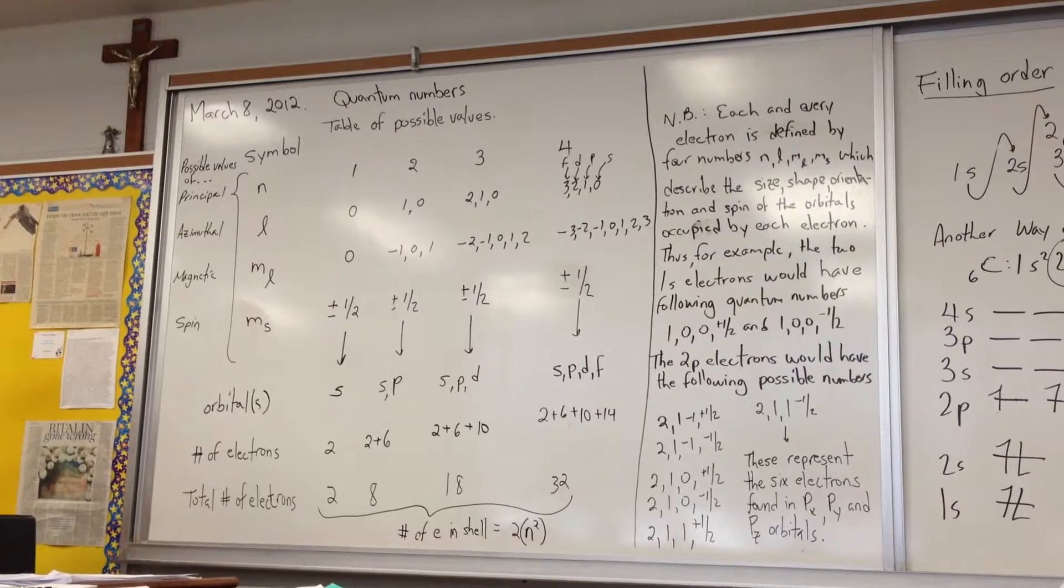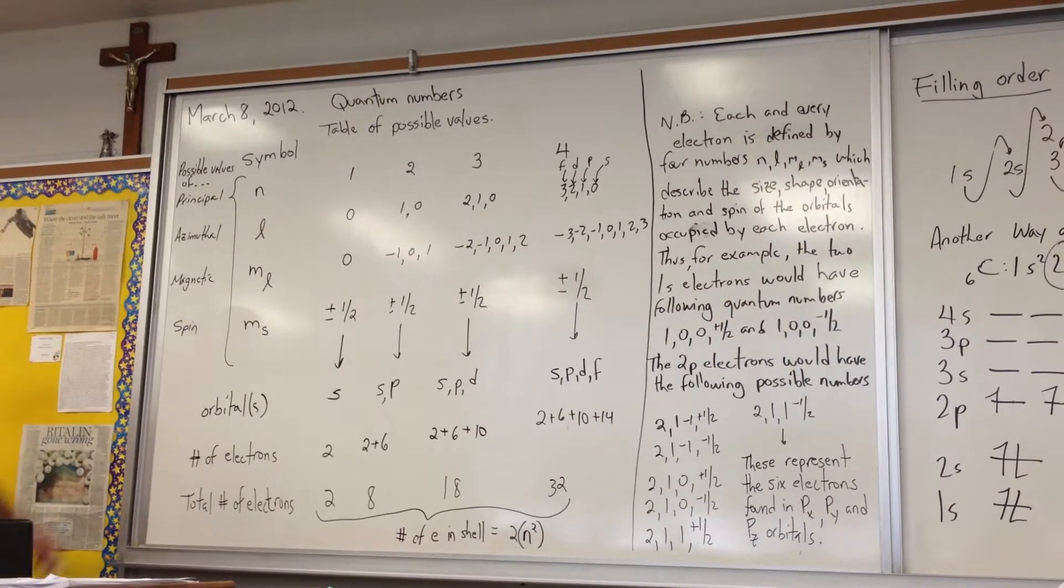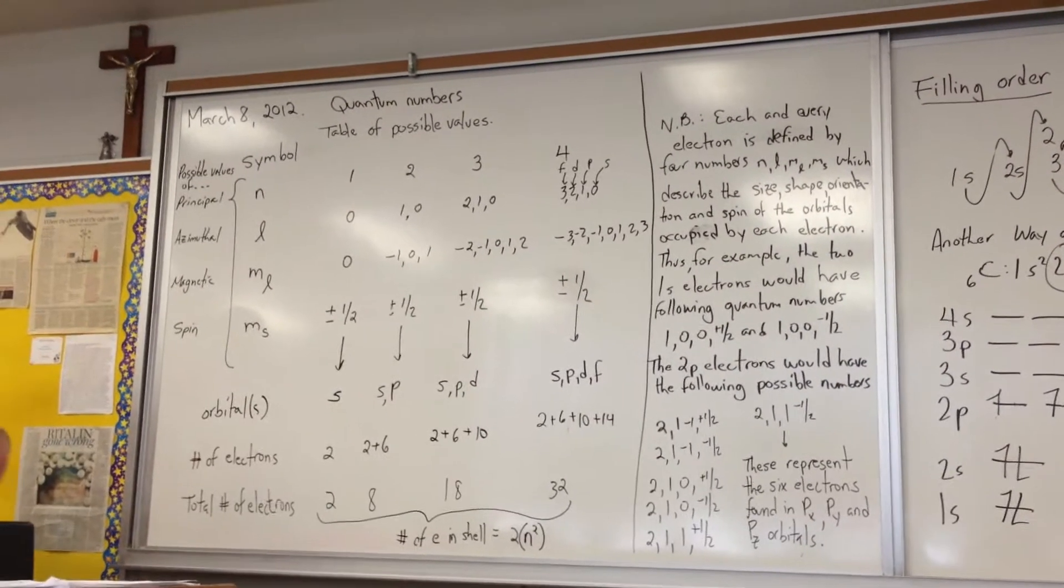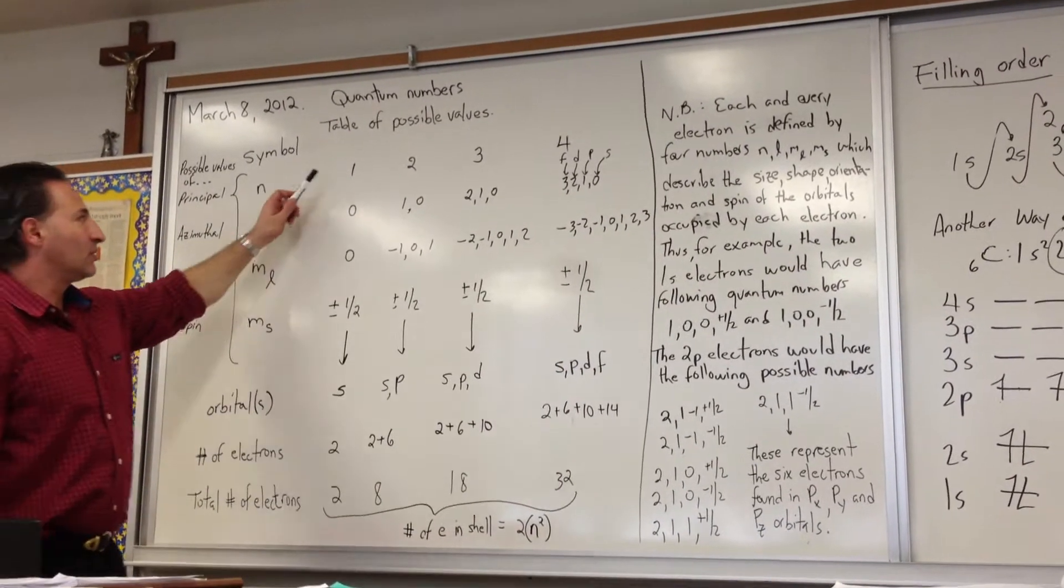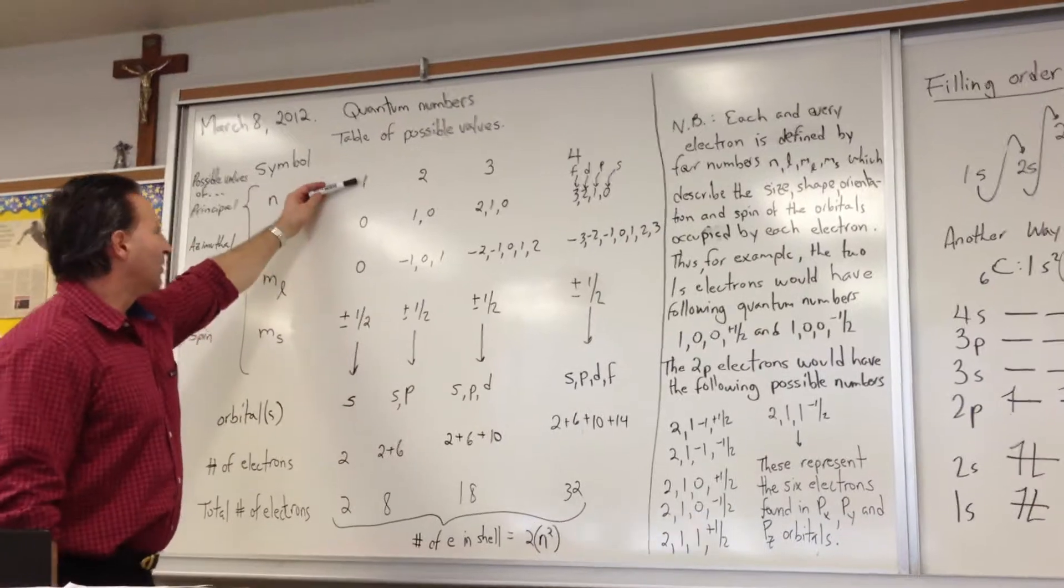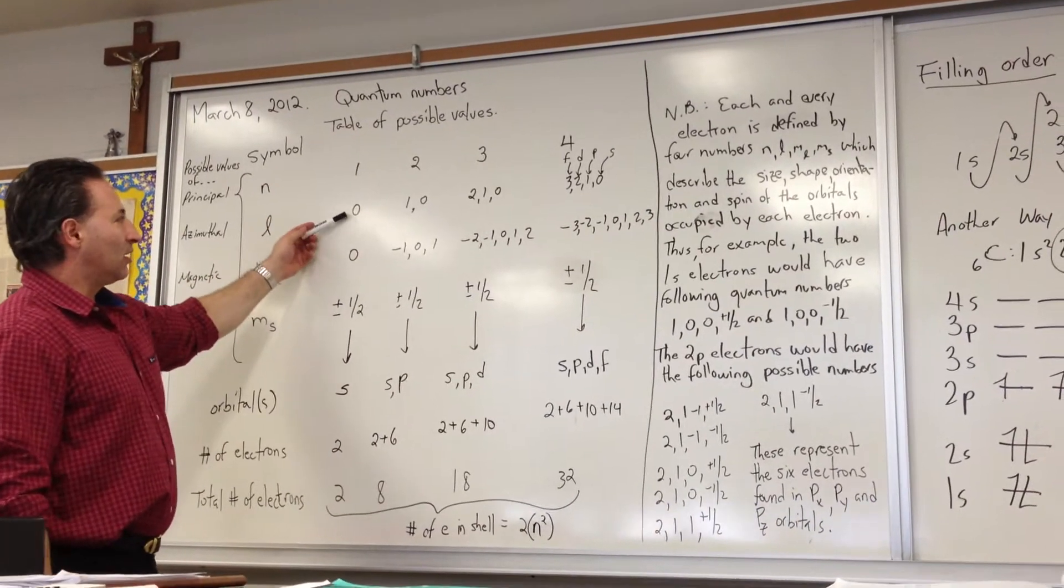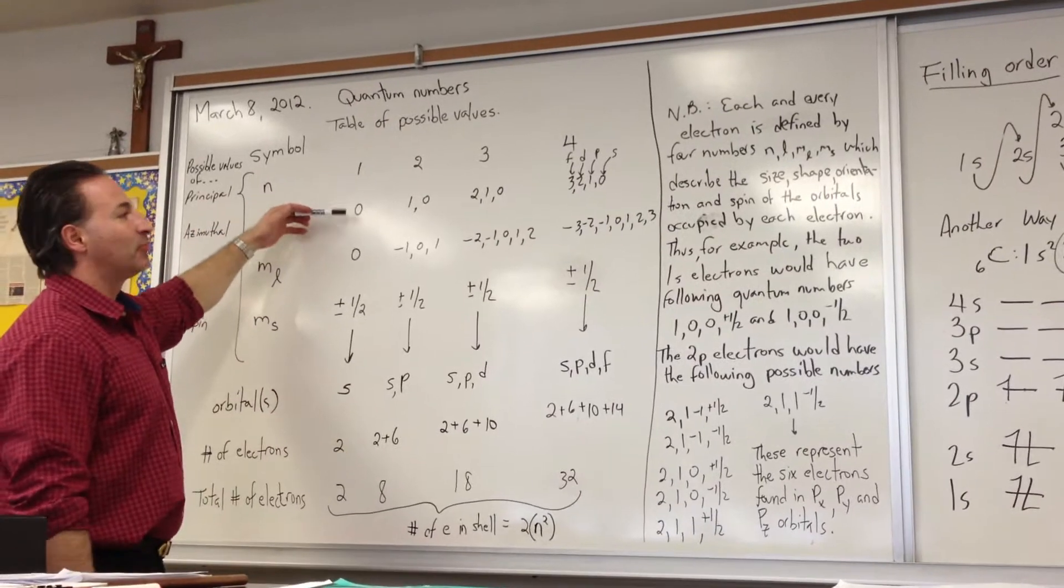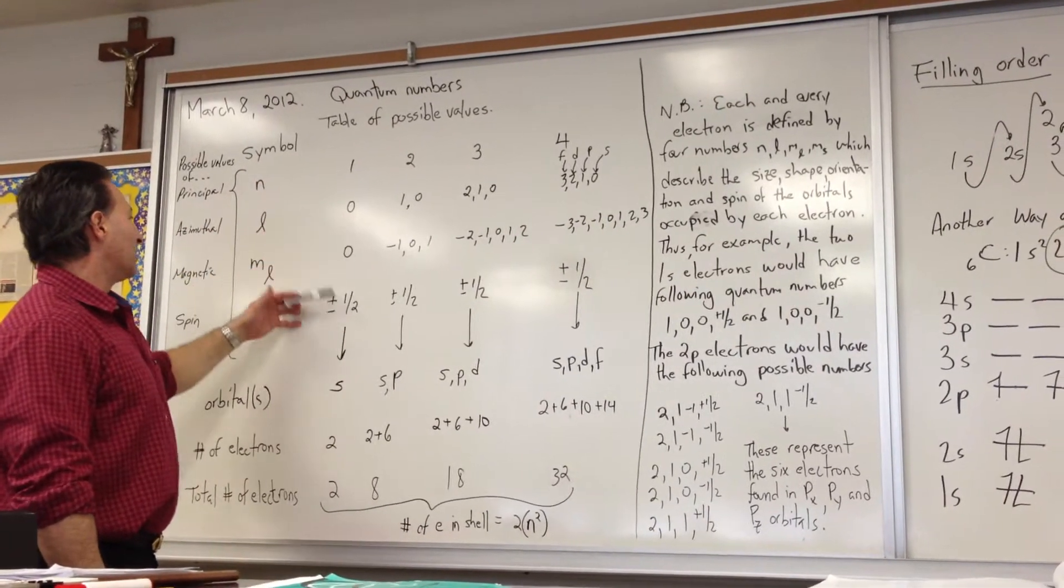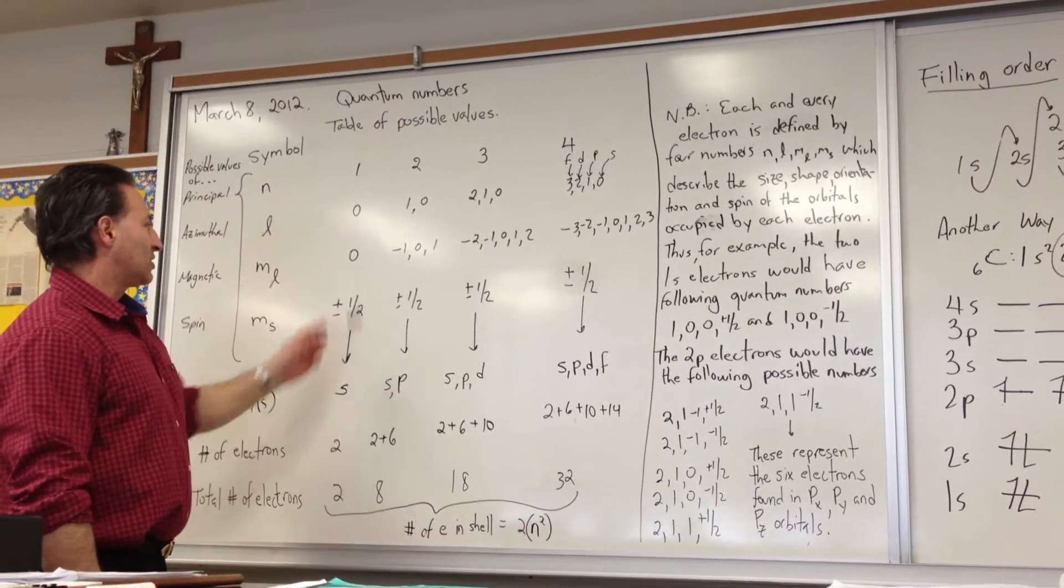Each electron in an atom has one of these numbers to represent it. So if the principal quantum number n is equal to one, the possible values for l are zero, because l is always n minus one up to n minus one. The magnetic is plus or minus l, so it still remains zero.